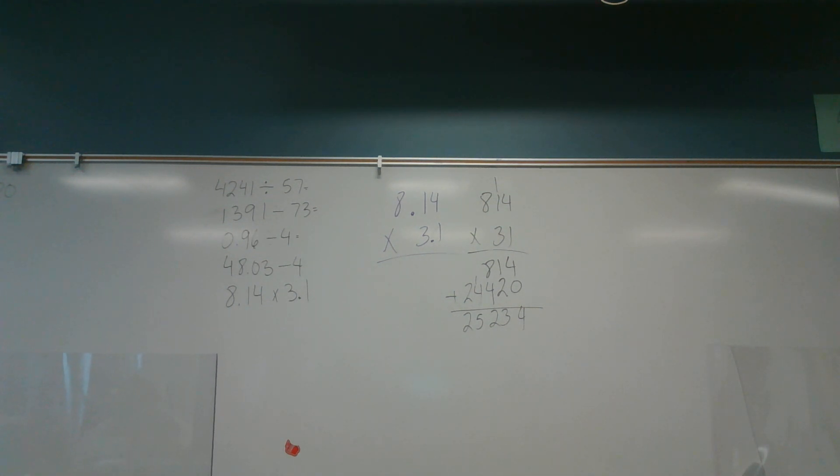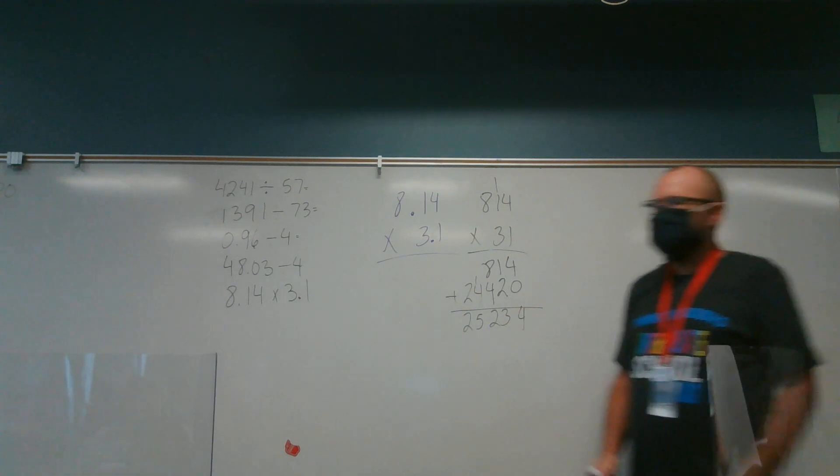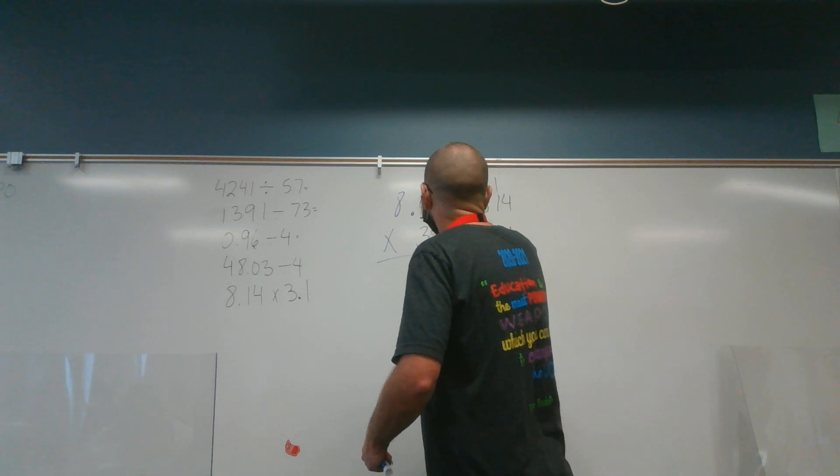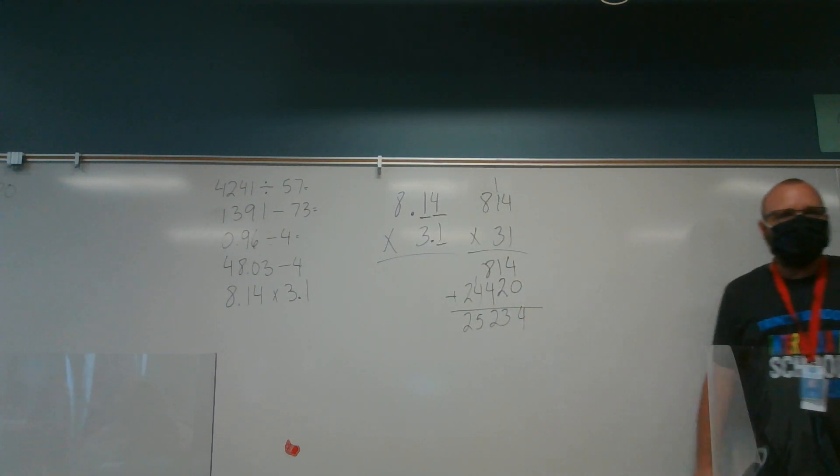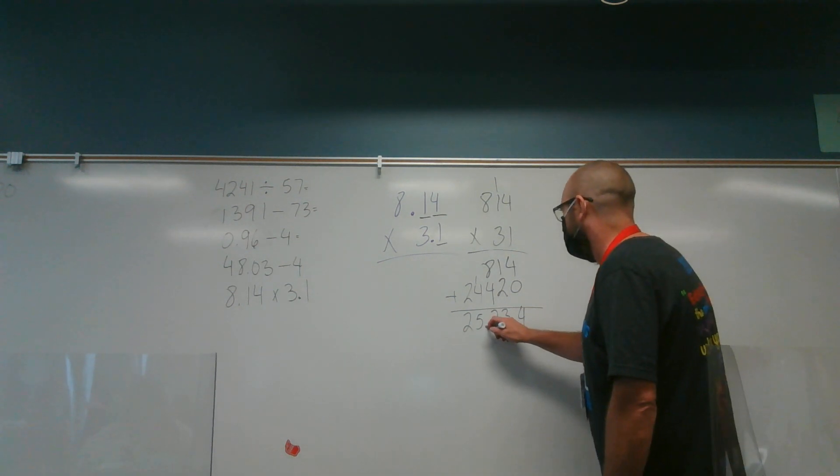So those are the numbers that are going to be in my product. And just like the warm-up you did yesterday, we go back and we look. In my problem, how many numbers are behind the decimal point? 3. This, this, and this. There are three numbers behind it in the problem. There have to be three numbers behind it in the answer.